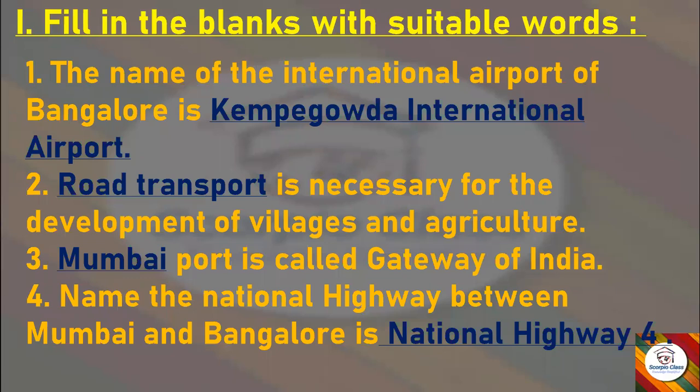We have fill in the blanks. The first one: the name of the international airport of Bangalore is ___. Answer: Kempe Gowda International Airport. Next: ___ is necessary for the development of villages and agriculture. Answer: Road transport. Next: ___ port is called the Gateway of India. Answer: Mumbai. Next: the national highway between Mumbai and Bangalore is named as ___. Answer: National Highway 4.